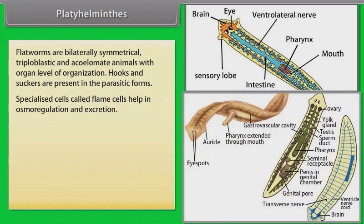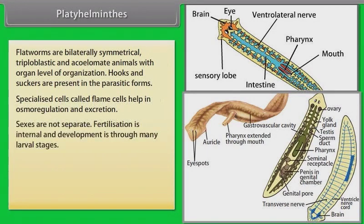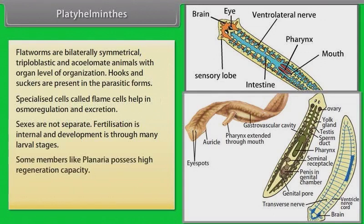Specialized cells called flame cells help in osmoregulation and excretion. Sexes are not separate. Fertilization is internal and development is through many larval stages. Some members like planaria possess high regeneration capacity.